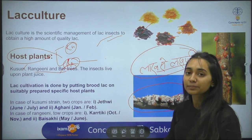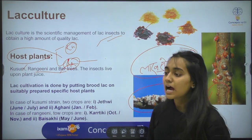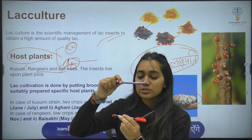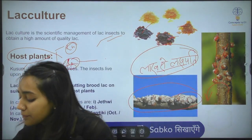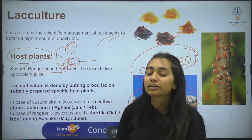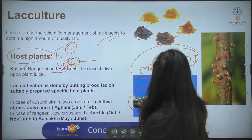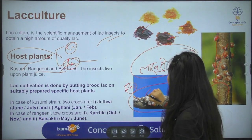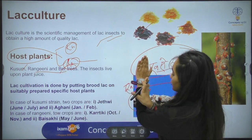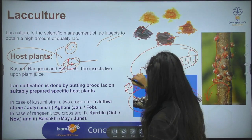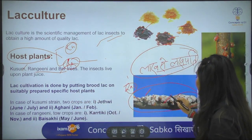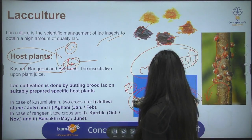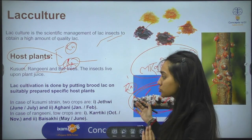You tie the brood lac to a branch of the host tree using different methods. The branches are arranged accordingly because the lac insect, when released, usually releases on the top. So you tie it and release it on the top, then cover it. This process is called inoculation — the insect is released and gradually the whole tree gets occupied, then you take the crop from the whole tree.